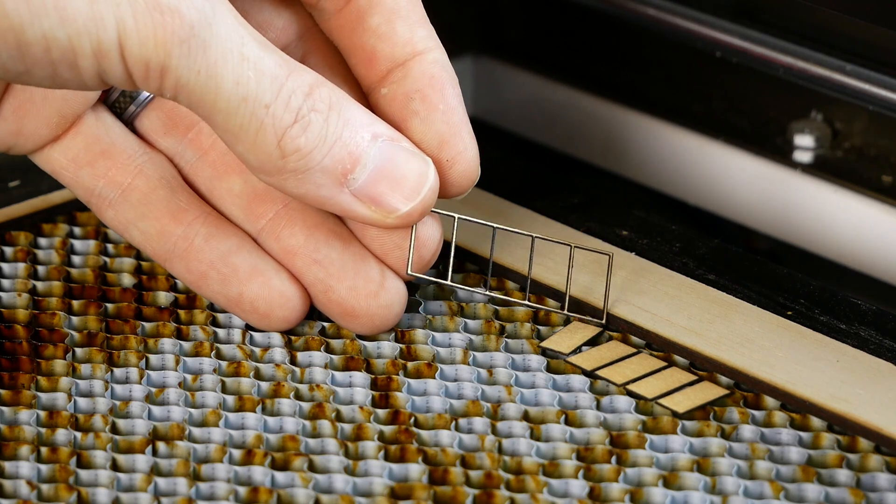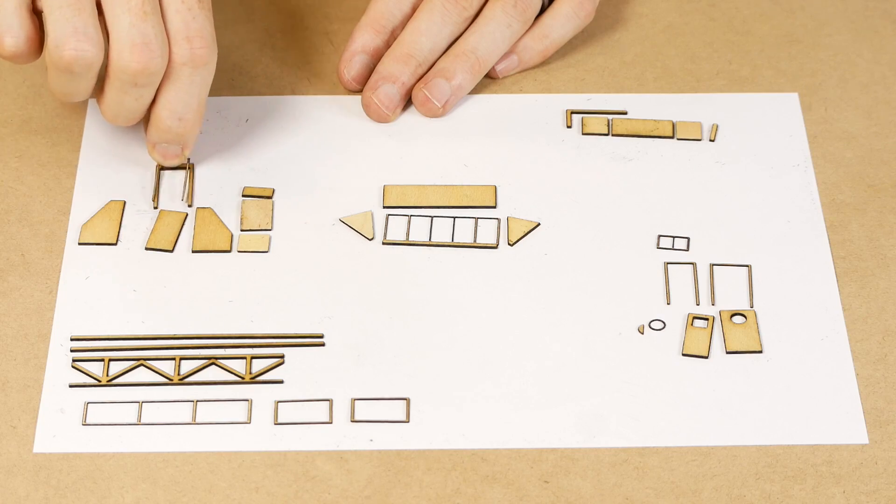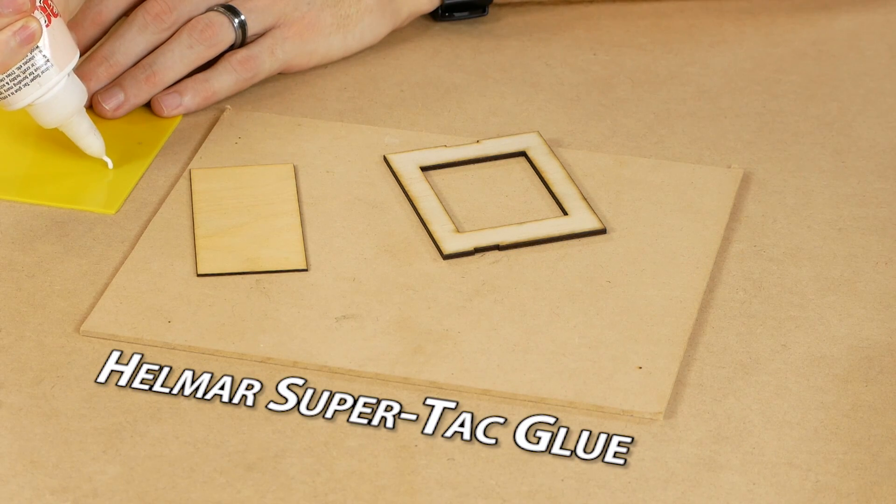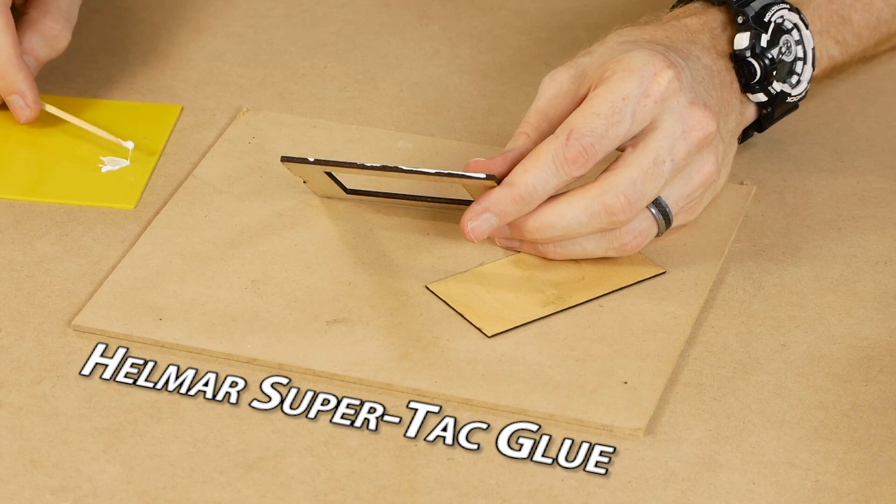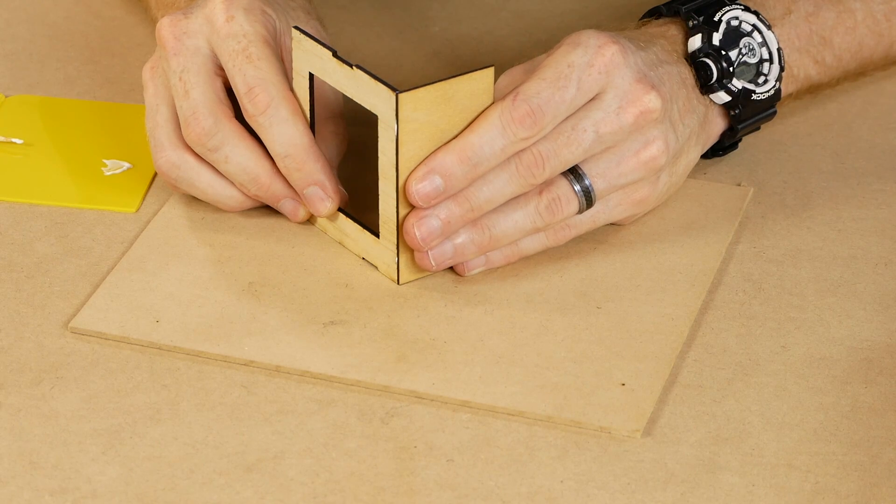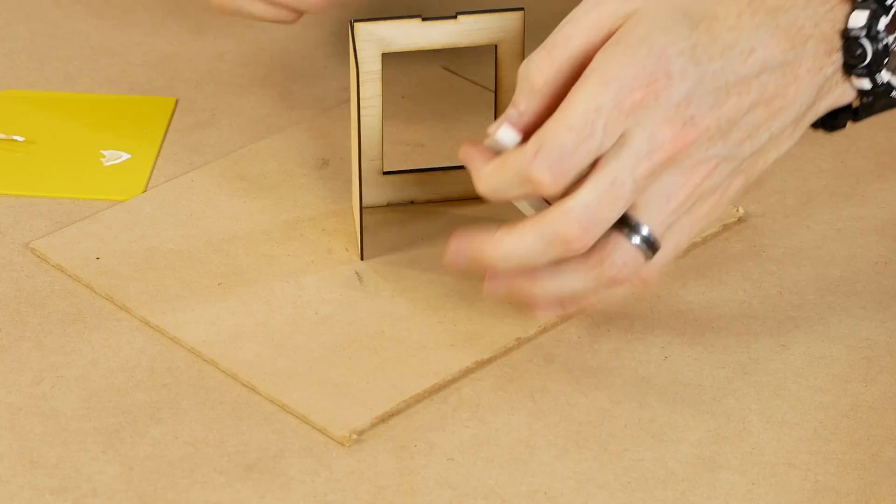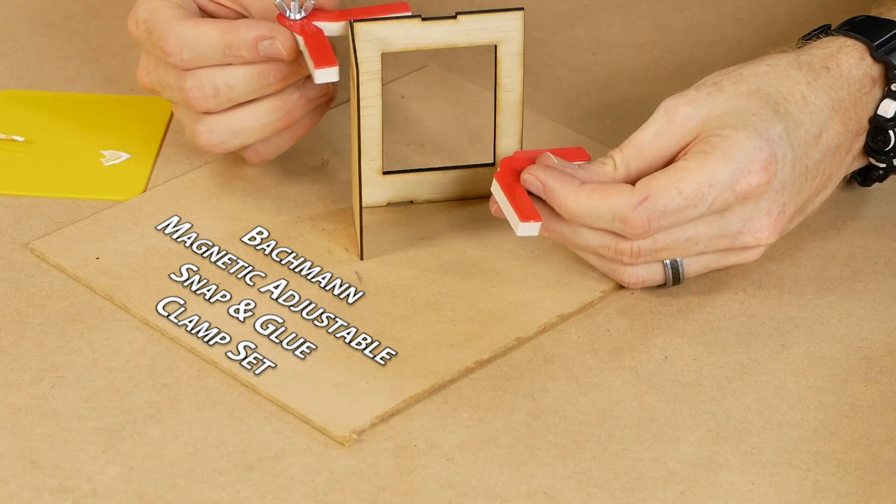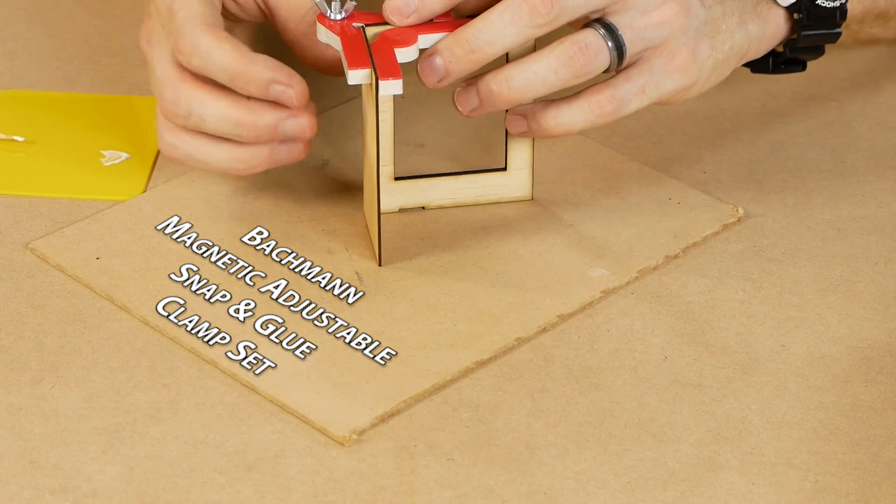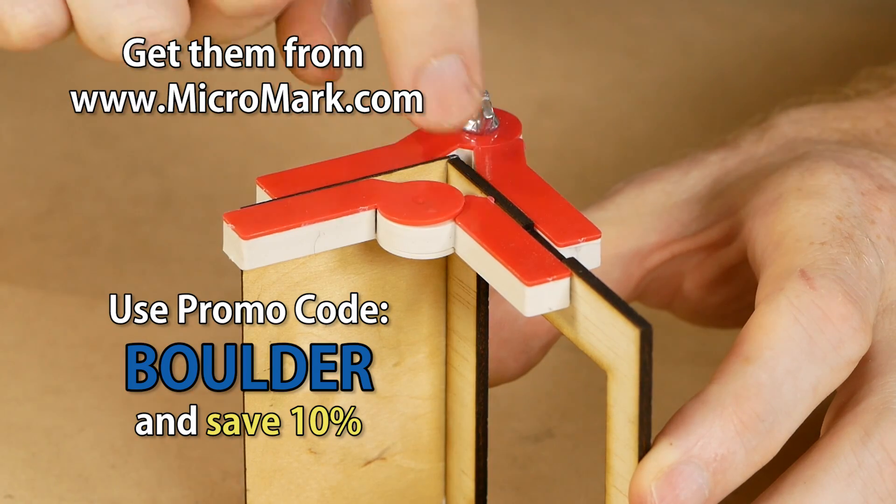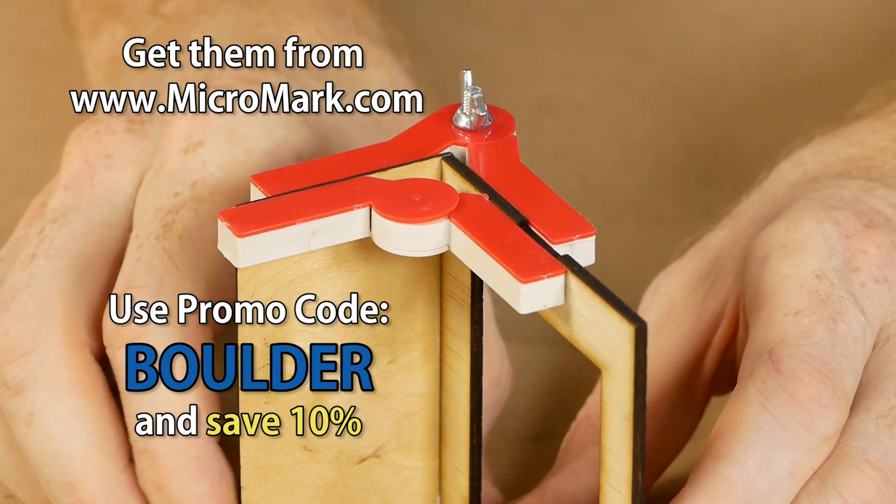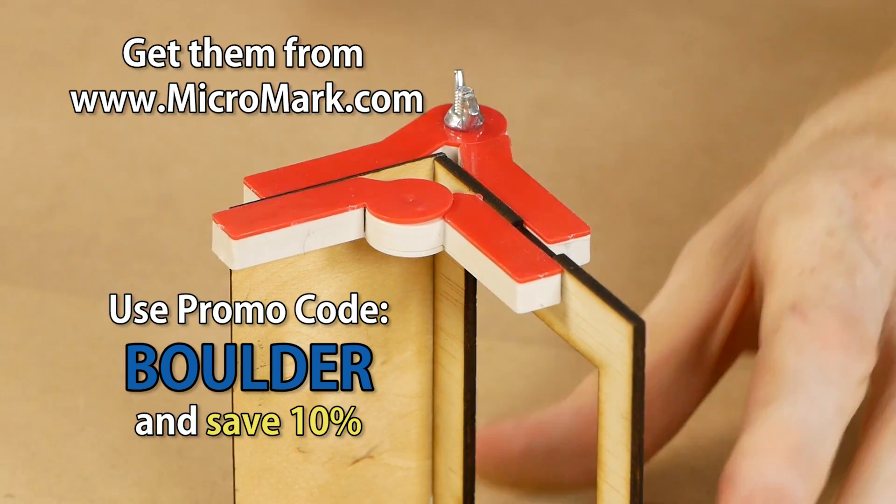Now that everything is cut, we can start assembly. The separate components are grouped together as necessary, and the main structures are glued together using Helmar SuperTac glue. I like this stuff because it's strong and it dries fast. I'm using Bachmann Magnetic Adjustable Snap and Glue Set to hold the walls together as they dry. I've been using these a lot when building various models, and they have come in very handy many times. They are available from Micromark, and if you want to save 10% off your total at the checkout you can use the promo code BOLDER.